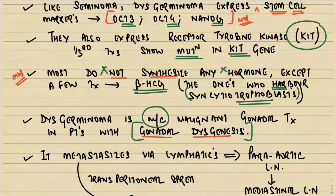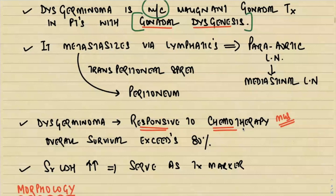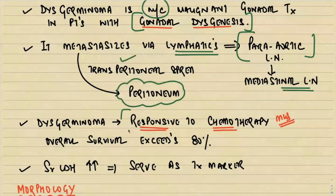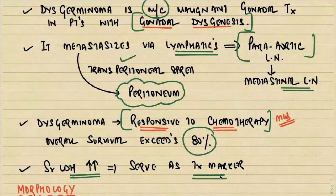Dysgerminoma metastasizes via lymphatics into the para-aortic lymph nodes, through which it reaches the mediastinal lymph nodes, or it can spread via the transperitoneal route into the peritoneum. Very importantly, dysgerminoma is responsive to chemotherapy and radiotherapy — this is an important MCQ as one of the most chemo- and radio-sensitive germ cell tumors. Overall survival exceeds 80 percent. Serum LDH is raised and can serve as a tumor marker, though it is not specific.